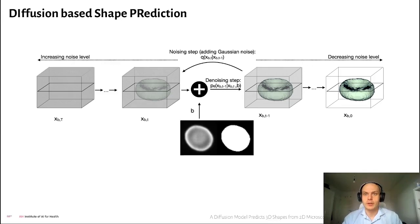Today we would like to introduce DISPR, a diffusion model for the shape prediction of 3D cell shapes from confocal microscopy images. My name is Ernst Roel, I'm a PhD student with Bastian Rieck at the Helmholtz Center in Munich.